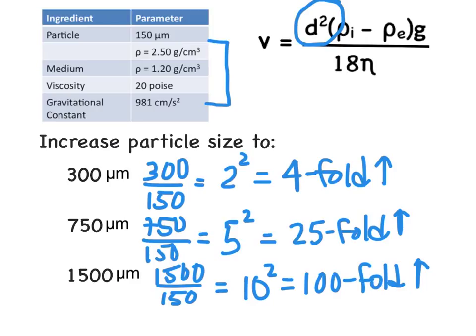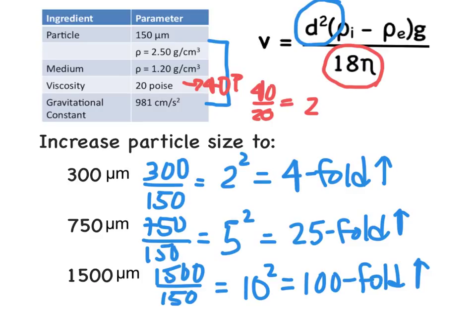We can also look at the effects that the viscosity of the medium has on the rate of particle settling. The viscosity term is in the denominator, so as we increase viscosity, we will decrease the rate of particle settling. Going from 20 poise to 40 poise is a two-fold change, and since there are no exponents on the viscosity term, that gives a two-fold decrease in the rate of particle settling.